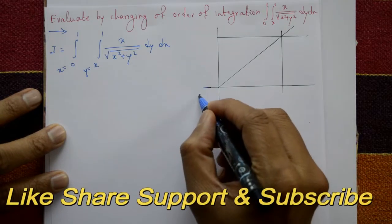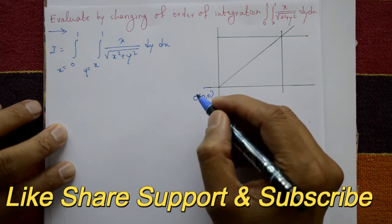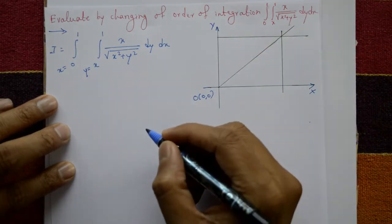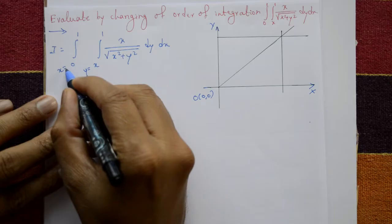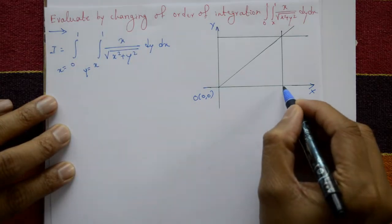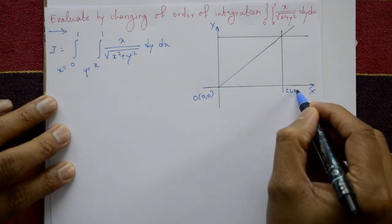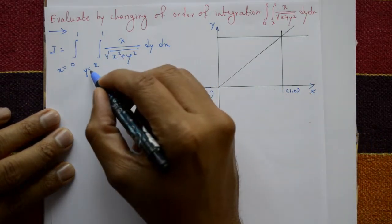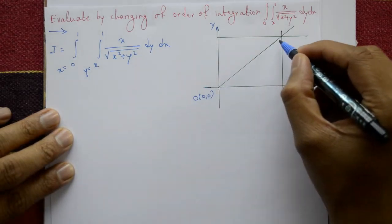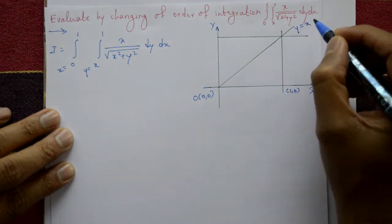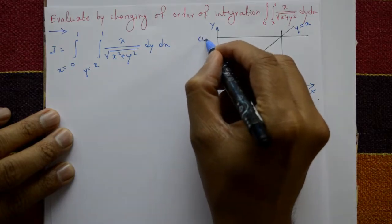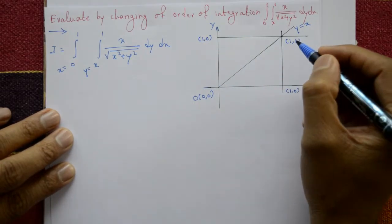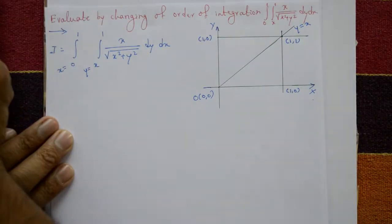Now see the diagram. This is the origin (0,0), this is the x-axis, and this is the y-axis. First, x goes from 0 to 1, so x=1 is at the point (1,0). Second, y goes from x to 1, meaning y=x — this line goes from y=x up to y=1. The point (1,1) is also on the boundary. Now take the common area.